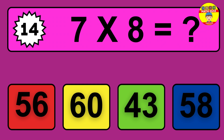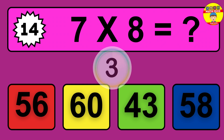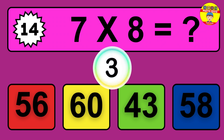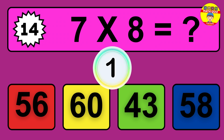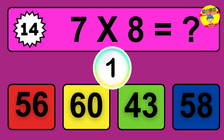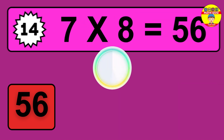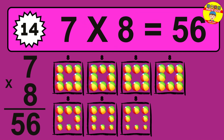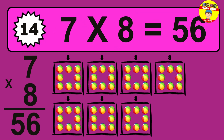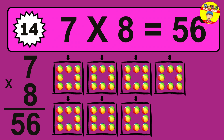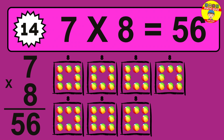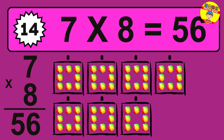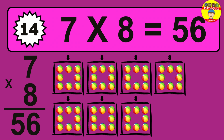Question 14. 7 times 8 equals what? The answer is 7 times 8 is 56. To calculate, we have 7 groups with 8 balls each one. So how many balls do we have? 56 balls.